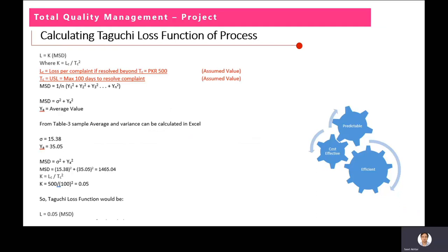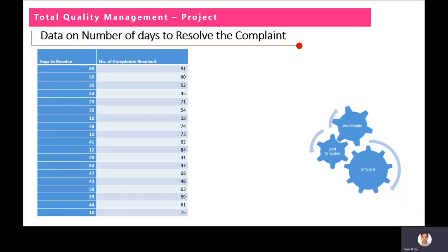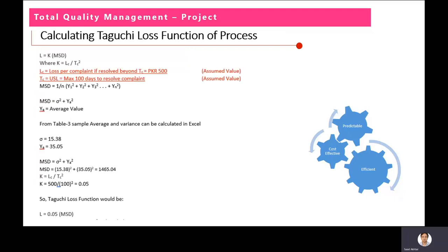Next we performed Taguchi analysis based on the data of number of days per complaint. Some values were not available so we assumed them, as highlighted in red. We assumed the loss per complaint beyond 100 days, and the upper specified limit is set to 100 days. This is a smaller-the-better case, so we used that formula. We calculated MST, the standard deviation average, and based on that the Taguchi loss function is: L = 0.05 × MST.